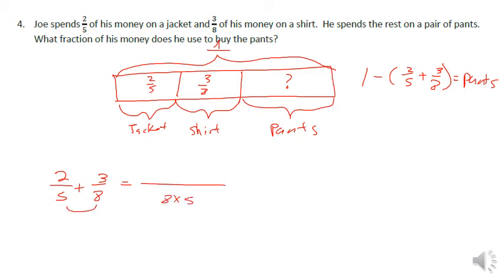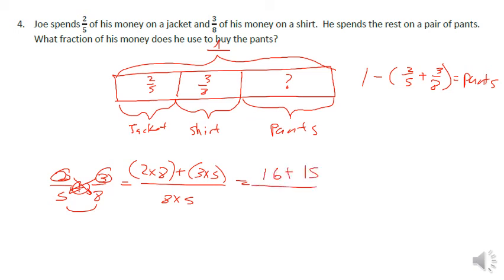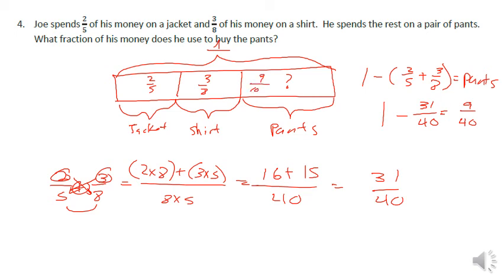Using the smiley face on two fifths plus three eighths, we get eight times five as the denominator, with two times eight plus three times five on top. That gives 16 plus 15 over 40, equaling 31 fortieths. We still have to subtract that from one. We know it takes 9 fortieths more to equal the whole, so the fractional part Joe spent on pants was nine fortieths.